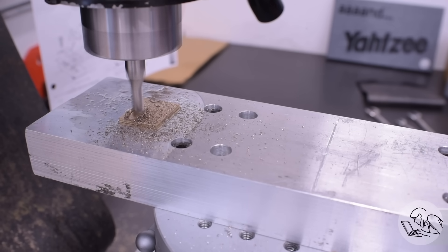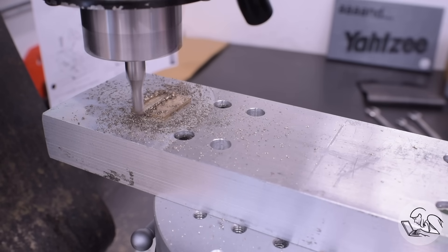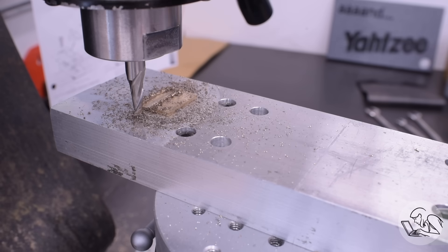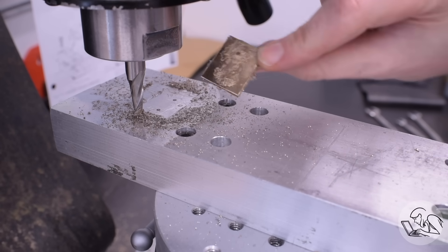But here's the thing about dull end mills. They make a lot of heat because they're rubbing as much as they're cutting and they make a lot of vibration. Guess what are two things that superglue really hates? Yep, the superglue failed on that after two cuts.